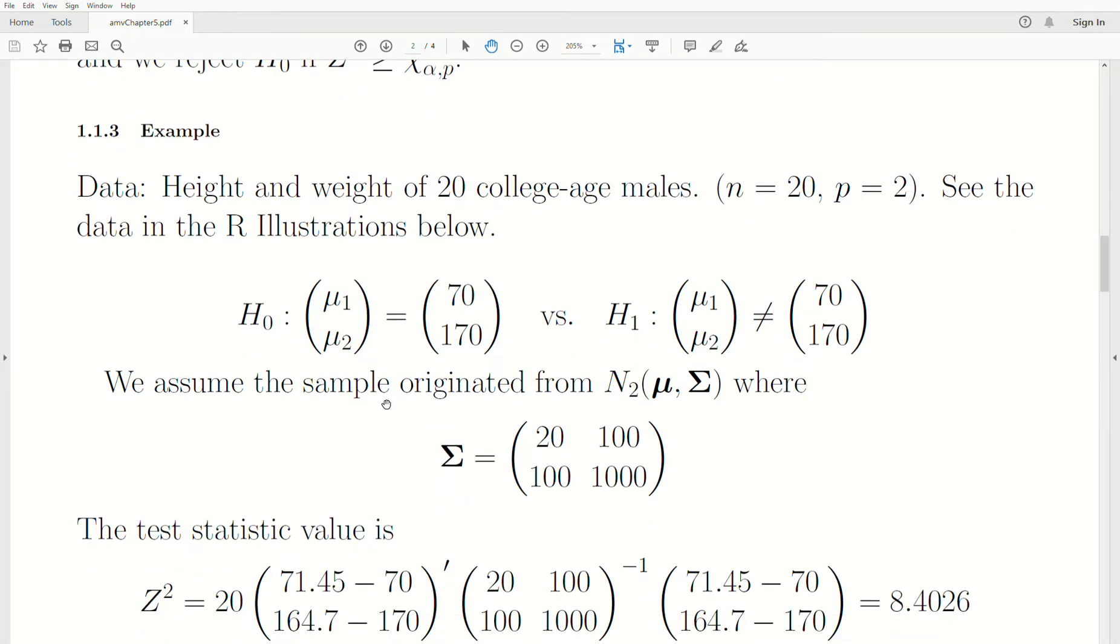And we're going to assume that the sample originated from a multivariate normal distribution with a known covariance matrix of this: 20, 100, 100, and 1,000. So the variances are down the diagonal.